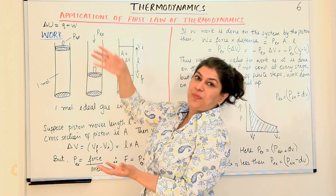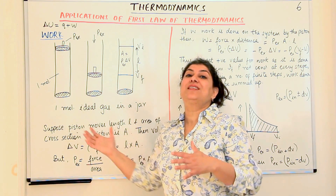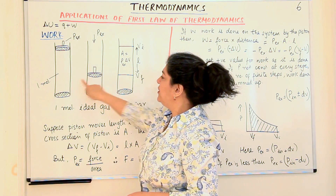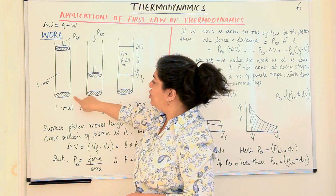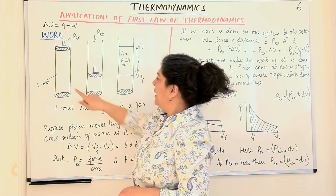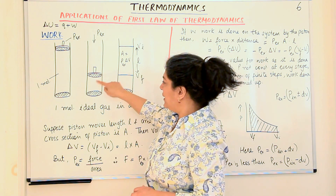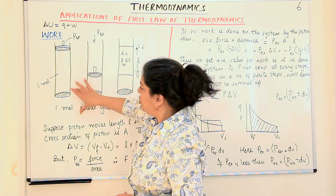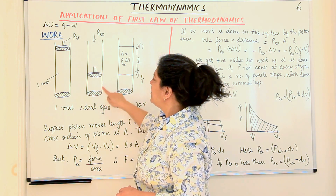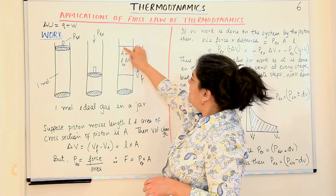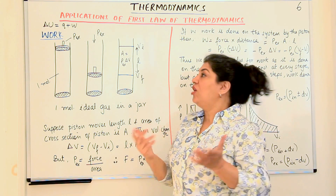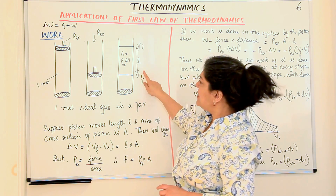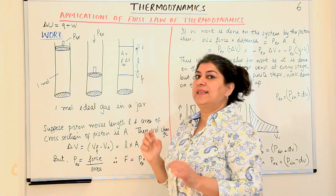Whenever contraction takes place, work is being done on the system. Whenever expansion occurs, the system is doing work on the surroundings. I have drawn the same jar in three situations. The initial volume goes from the top to the initial piston level, called VI, and the final volume is down to the bottom of the jar, called VF. Let us assume that the distance the piston travelled is length L.